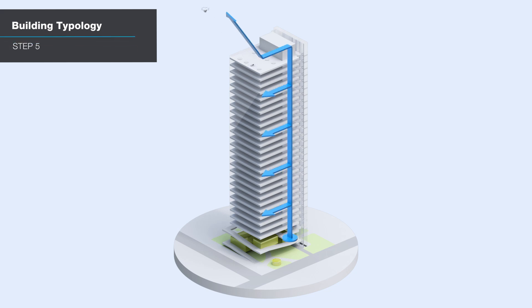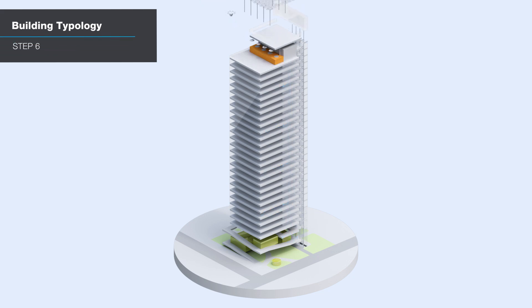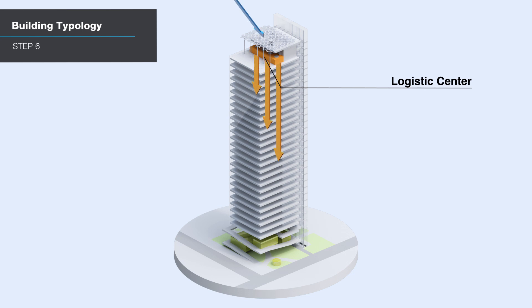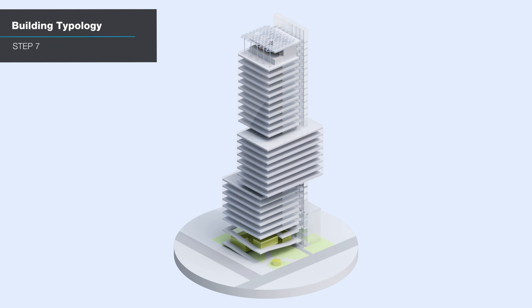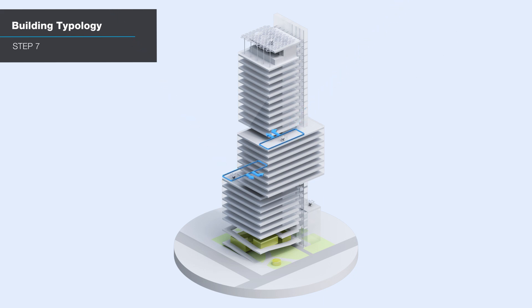A shuttle lift can connect directly between the ground and sky. The logistic centre function on the roof allows for seamless integration of the tower architecture and the city on the ground level. By shifting the building volume, it allows for V-port operation on the transfer floors, making accessibility more efficient and direct.